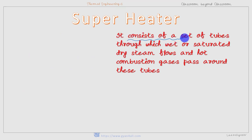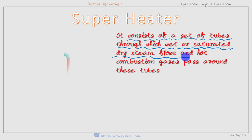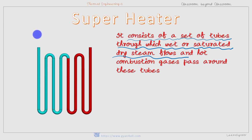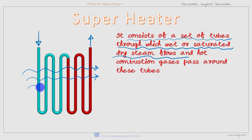A superheater consists of a set of tubes through which wet or saturated dry steam flows, and hot combustion gases pass around these tubes. Wet steam enters at one end and the superheated steam escapes from the same tube at the other end. During this time, the hot combustion gases pass around these tubes, so heat exchange takes place, and the wet steam or dry steam is converted to superheated steam.